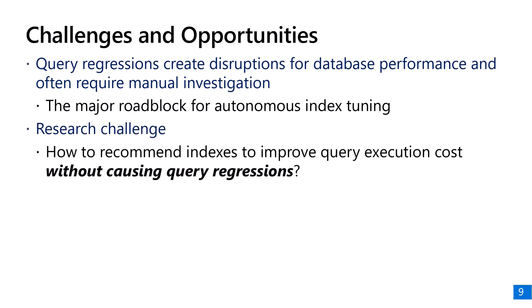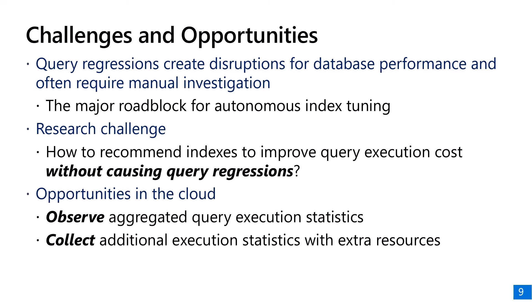Since query regressions can create disruptions for database performance and often require manual investigation, they are a major roadblock for operationalizing autonomous index tuning. The challenge is: how can we recommend indices to improve query execution cost without causing query regressions? Of course, there are also new opportunities in the cloud — we can observe aggregated query execution statistics for many databases, and we also have extra resources to collect additional execution statistics.